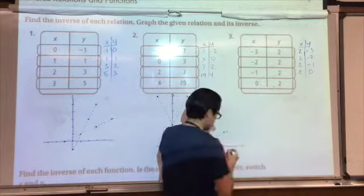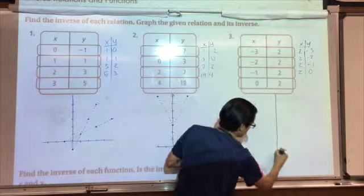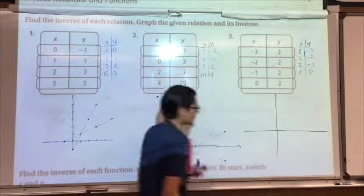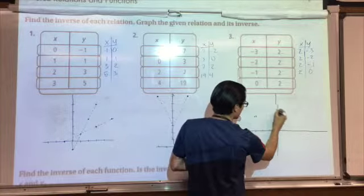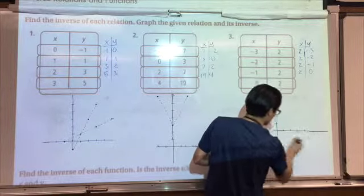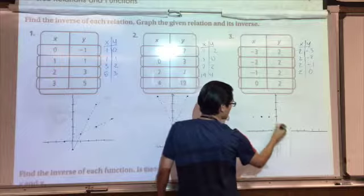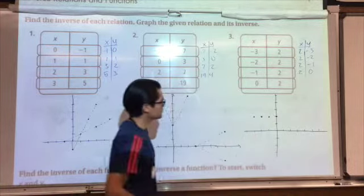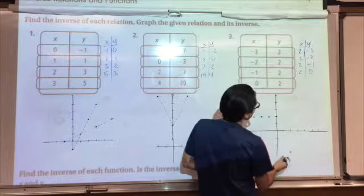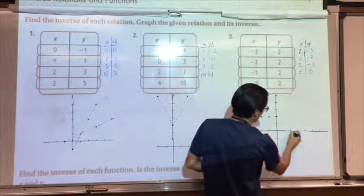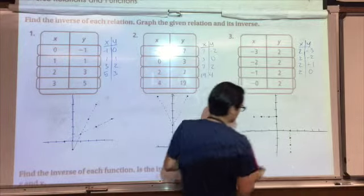Number 3 — let's graph it. I already made the table. Looks like I have a lot of negatives and positives here, so I actually do need a full graph. The original relation: negative 3, negative 2; negative 2, 2; negative 1, 2; and 0, 2 — it looks like I have a horizontal line. The inverse is: 2, negative 3; 2, negative 2; 2, negative 1; and 2, 0 — and it looks like I have a vertical line. This is the original function and this is the inverse.